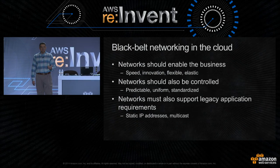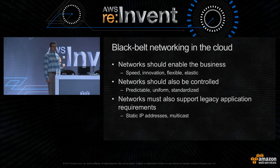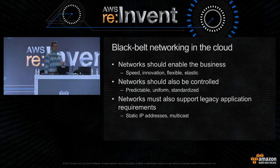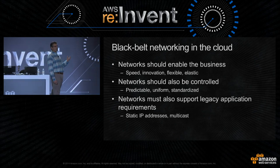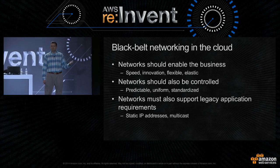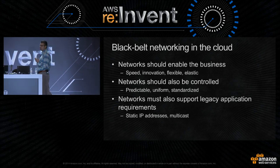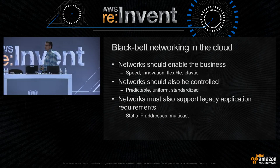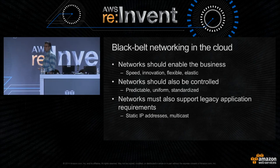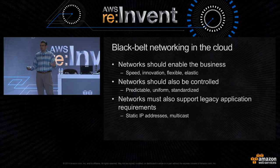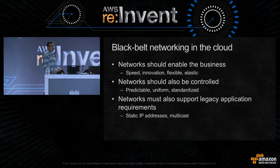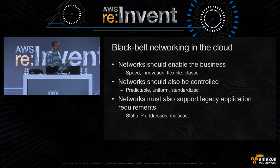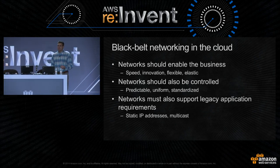One of the things I've seen as a common theme across our customers — and I'm sure many of you are dealing with these same challenges — is that on one hand, we really need our networks to support and enable our business. We want our networks to provide speed, agility, innovation, and flexibility, supporting the elastic nature of the cloud. On the other hand, we want our networks to be controlled, predictable, uniform, and standardized.